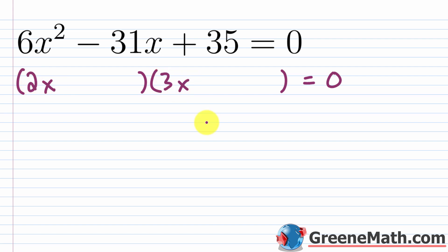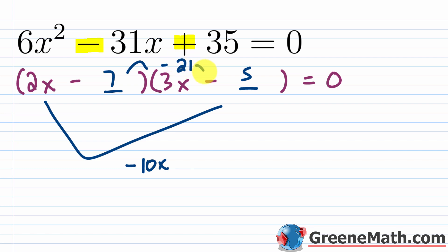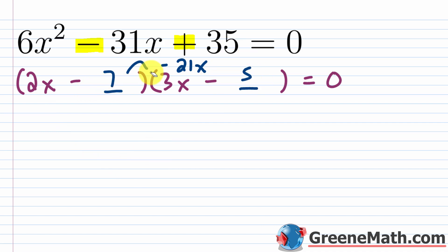Both signs are negative because a negative plus a negative gives the negative middle term, and a negative times a negative gives the positive constant. For the constant 35, the factor pairs are 1×35 and 5×7. Using 7 and 5: the outer product is −10x and the inner product is −21x, which add to −31x. And negative 7 times negative 5 is positive 35 — correct factorization.